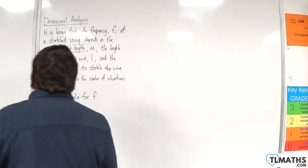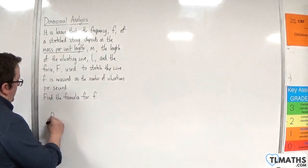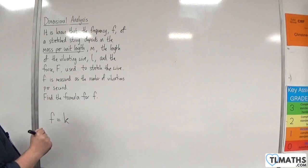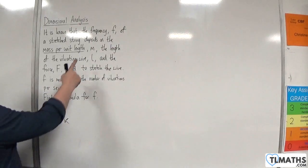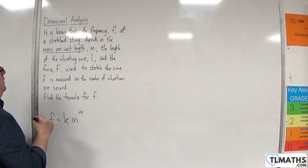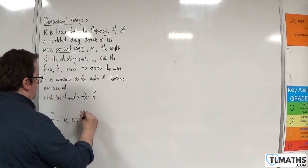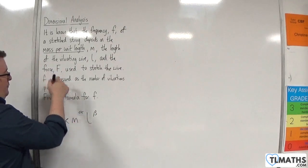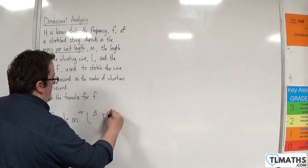So the formula for f will be equal to some dimensionless constant k times by m to the power of alpha times by l to the power of beta times by f to the power of gamma.